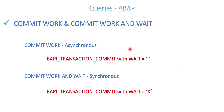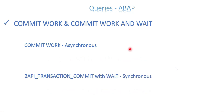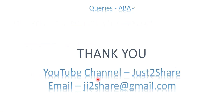To summarize: commit work is always asynchronous. BAPI transaction commit with the wait parameter set to 'X' is synchronous; without it, it is asynchronous. After a BAPI, it is preferable to use BAPI transaction commit. Hope this gives clarity about the difference between commit work and BAPI transaction commit. Thank you so much, see you in the next video.